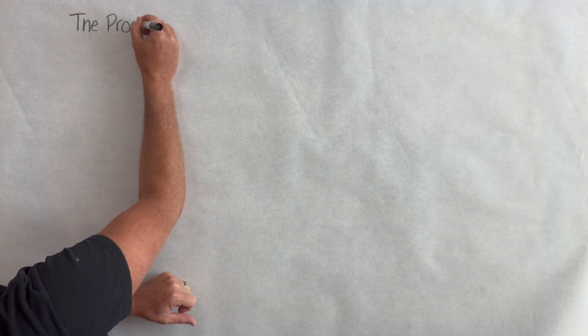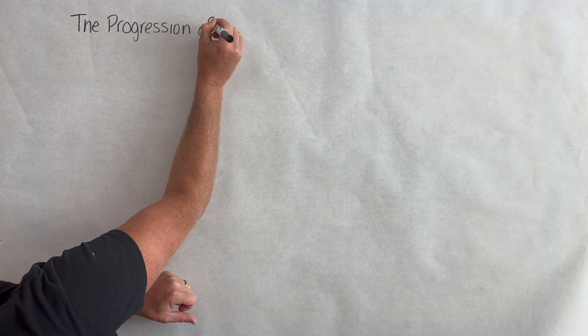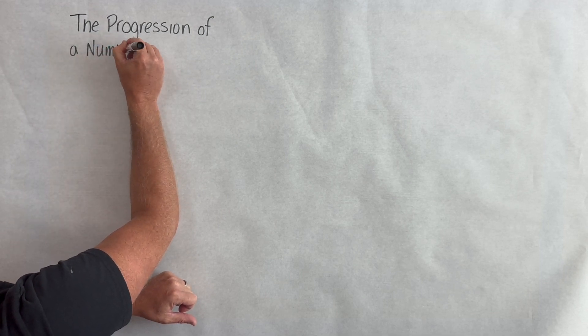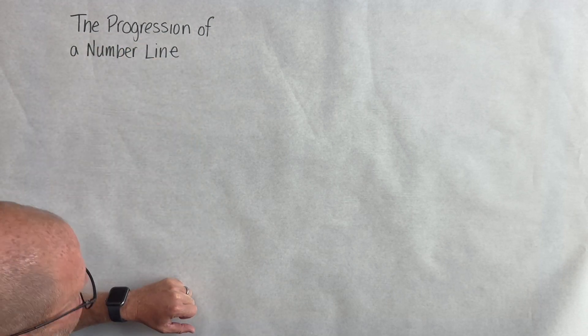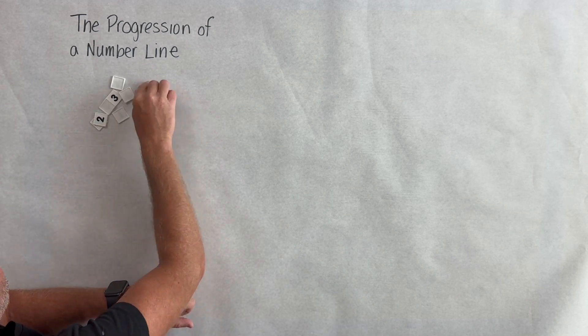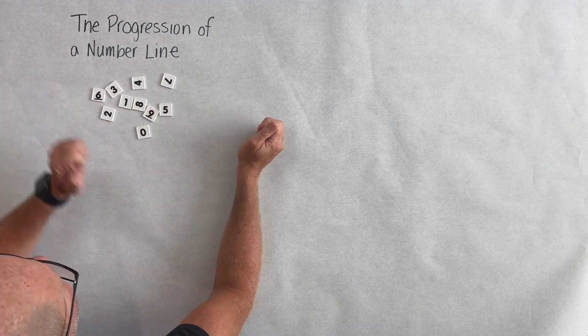In this video we're going to unpack the progression of a number line in grades kindergarten through second grade. Now when students come to us in kindergarten they know that there are these number names, but they might not know the order.